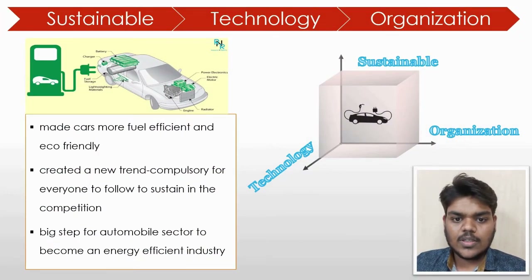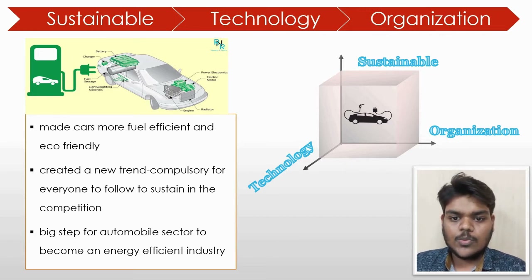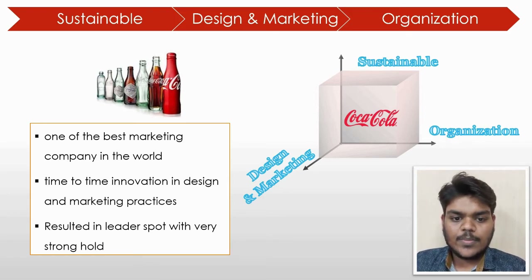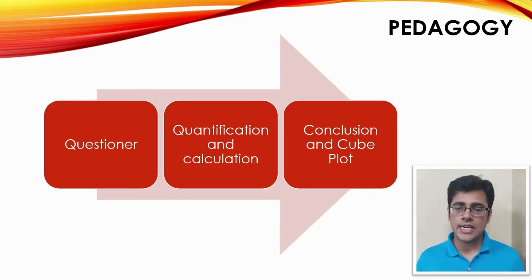Next is sustainable-technology-organization: hybrid cars. Hybrid cars made automobiles more fuel-efficient and eco-friendly, creating a new trend in the automobile industry that every manufacturer must now follow to remain competitive. The tenth example is sustainable-design-and-marketing-organization: Coca-Cola, one of the best marketing companies in the world, whose time-to-time innovation in design and marketing practices has kept it in the leader spot. Now that we are clear on the basics of the Innovation Audit Framework and the methodology, it is time for the most interesting aspect of the project: quantification.